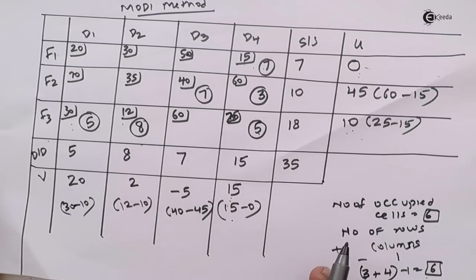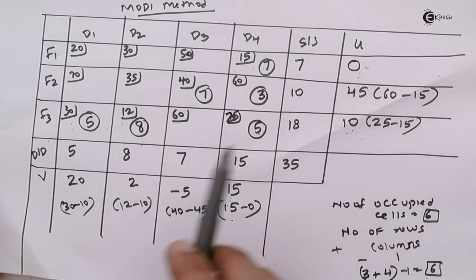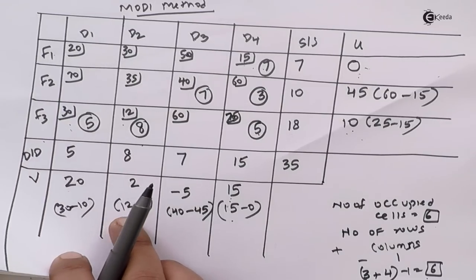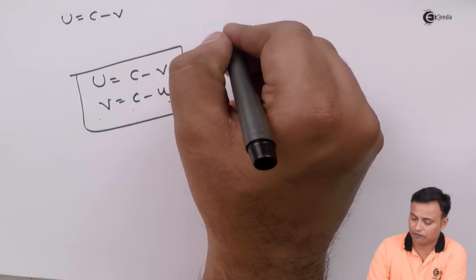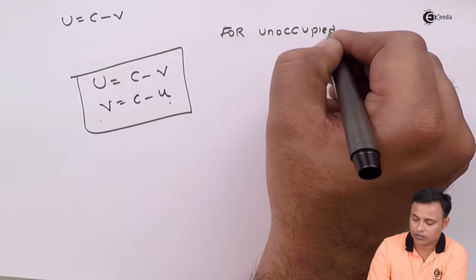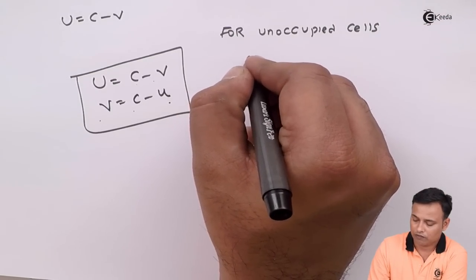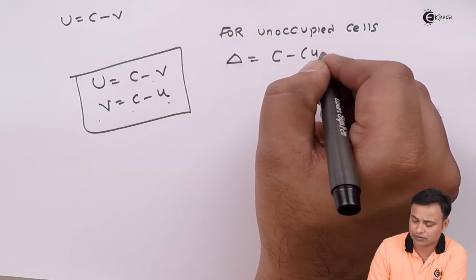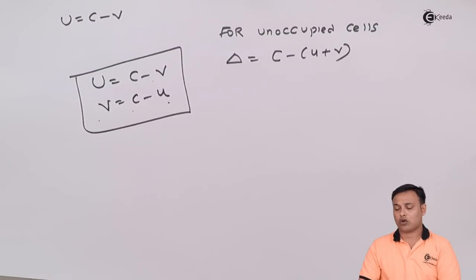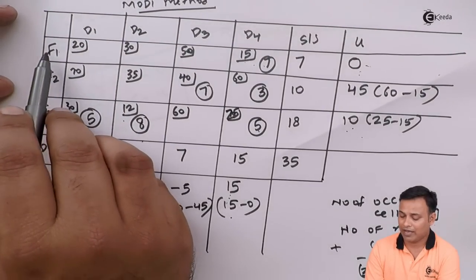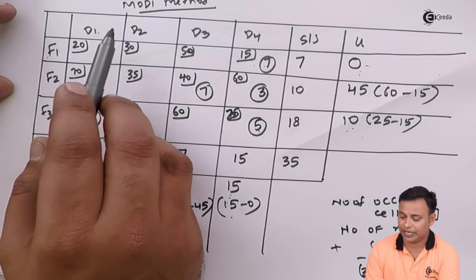The negative delta value of −12 at cell F2-D2 indicates the current solution is not optimal. We need to draw a loop starting at the cell with the highest negative value. We then check for unoccupied cells: F1-D1, F1-D2, and F1-D3 are unoccupied in the first row.